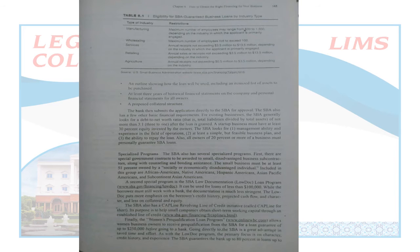Regarding eligibility for SBA guaranteed business loans by industry: remember these books are developed in a Western context — America and UK. For example, for a manufacturing company, restrictions include a maximum number of employees of 500 to 1,500 — these employees must be present for the loan to be granted, depending on the industry in which the applying company primarily operates.